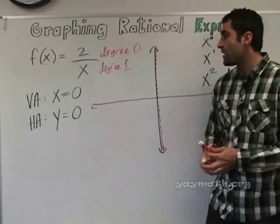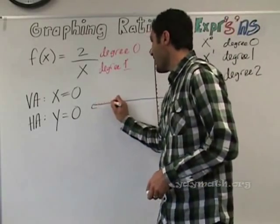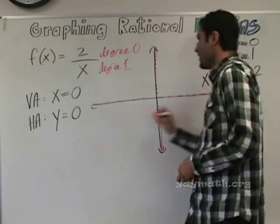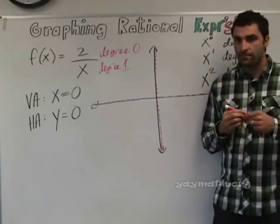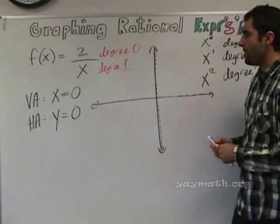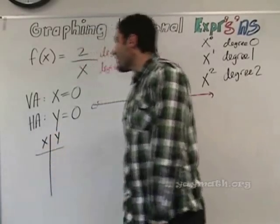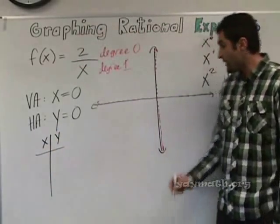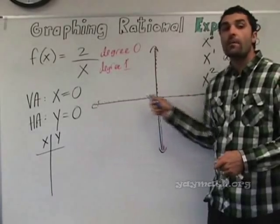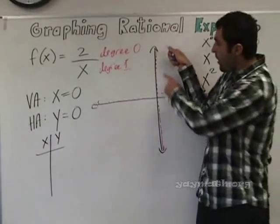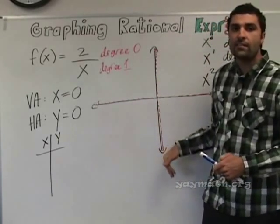What does the line y equals 0 look like? The x-axis. It is pretty much aligned with the x-axis. So these two asymptotes are where the graph will never touch. Now we can plot some points and see what happens. X and y — the graph we're about to draw will never touch an asymptote.